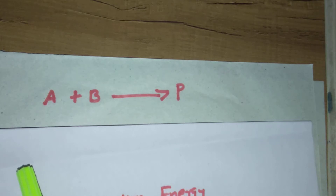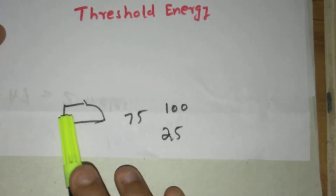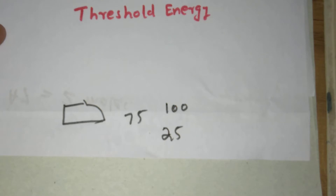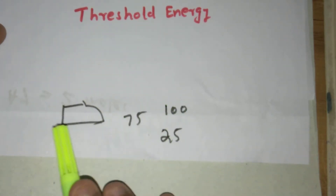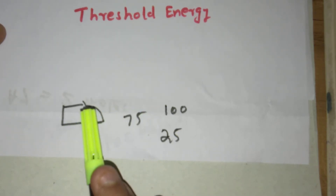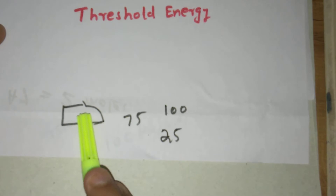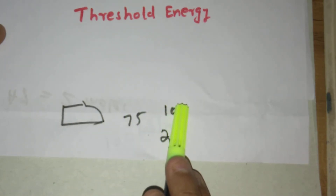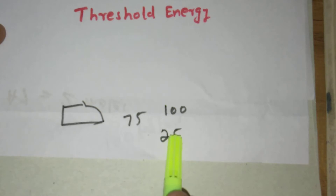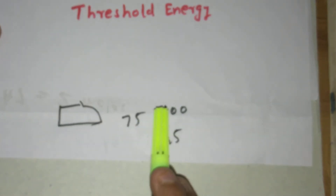Consider a mobile SIM card. The minimum balance required for outgoing call service is $100. The present balance is just $25, so we will recharge $75 — then only we can activate the outgoing call service.